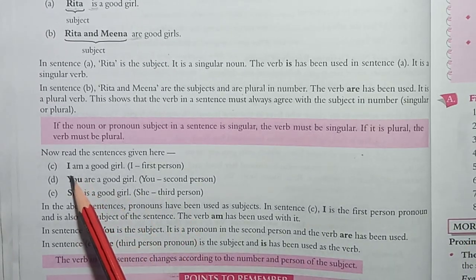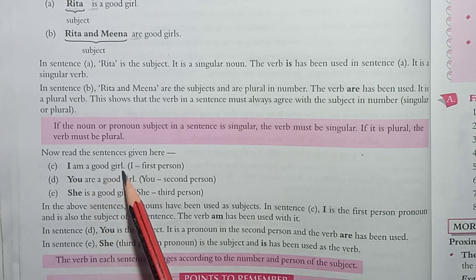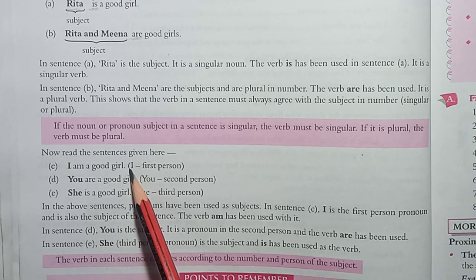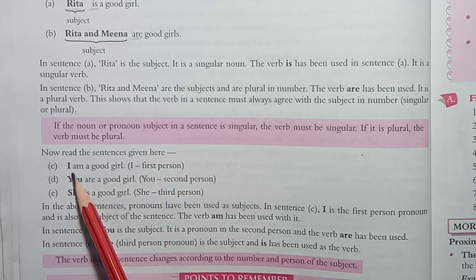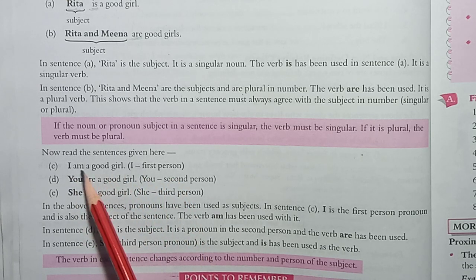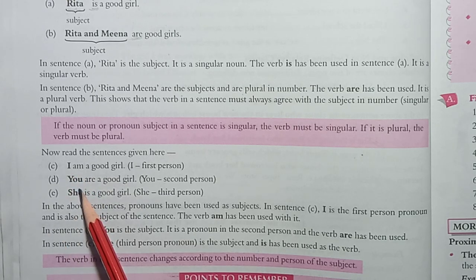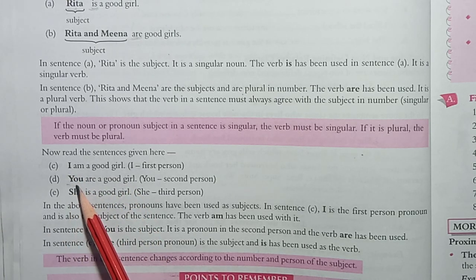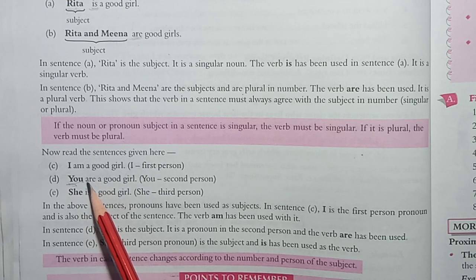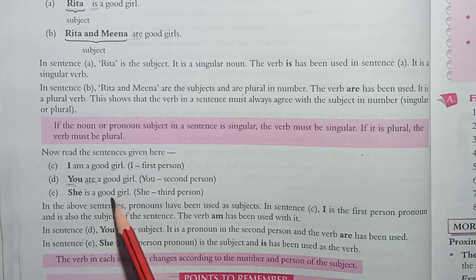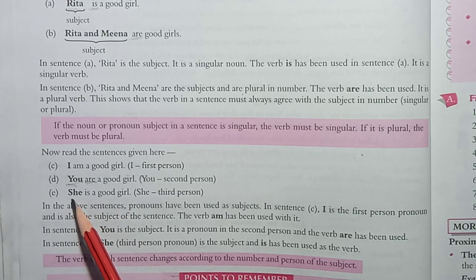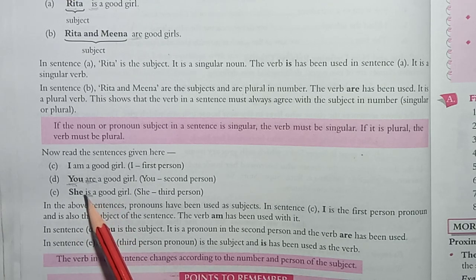Now look, some sentences are given here. 'I am a good girl.' — 'I' is a first person pronoun, so you will use 'am' as the helping verb with 'I'. 'You are a good girl.' — 'you' is a second person pronoun, used as plural, so you use 'are'. 'She is a good girl.' — 'she' is a third person singular pronoun, so you use a singular verb.